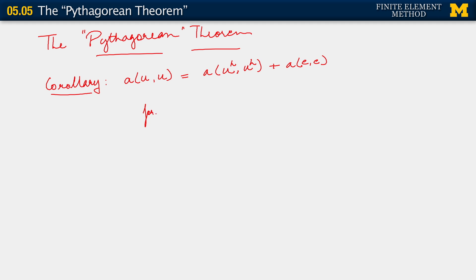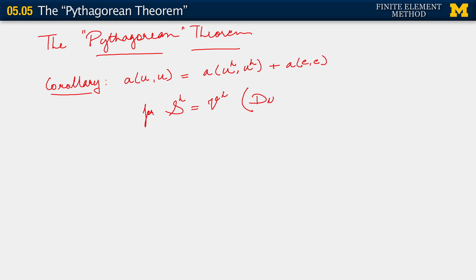The corollary is this: if we consider the energy norm of the exact solution, this is equal to the energy norm of u_h plus the energy norm of the error. For a specific kind of problem, this holds for a problem where S_H equals V_H.